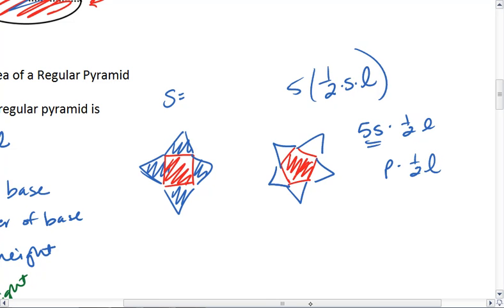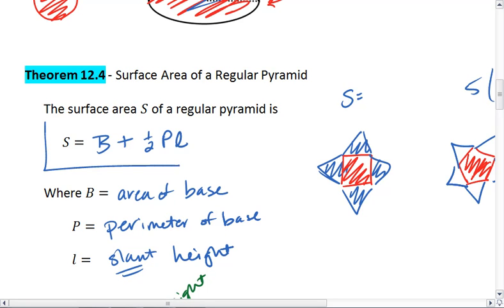So again, we have perimeter times one half times slant height. So this is our ever important surface area formula for a regular pyramid.